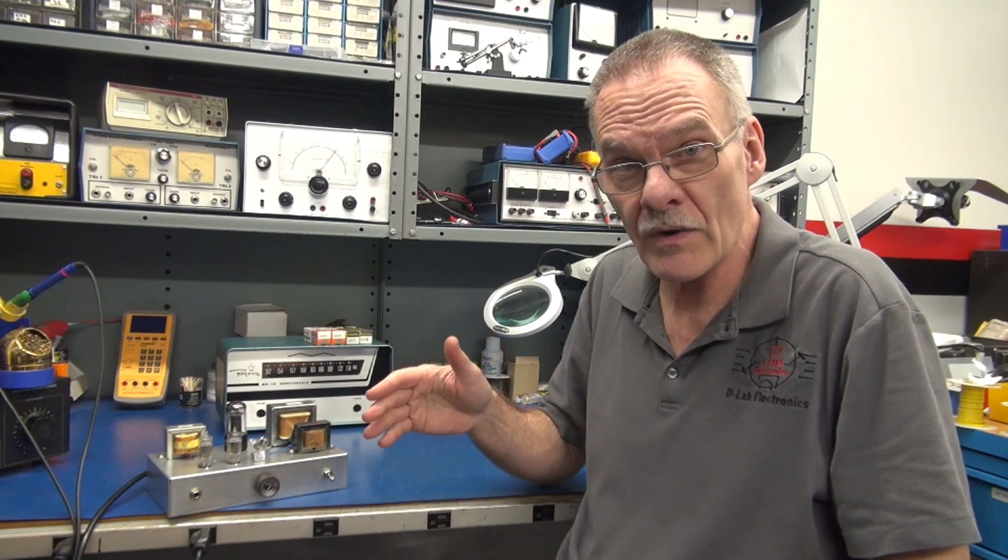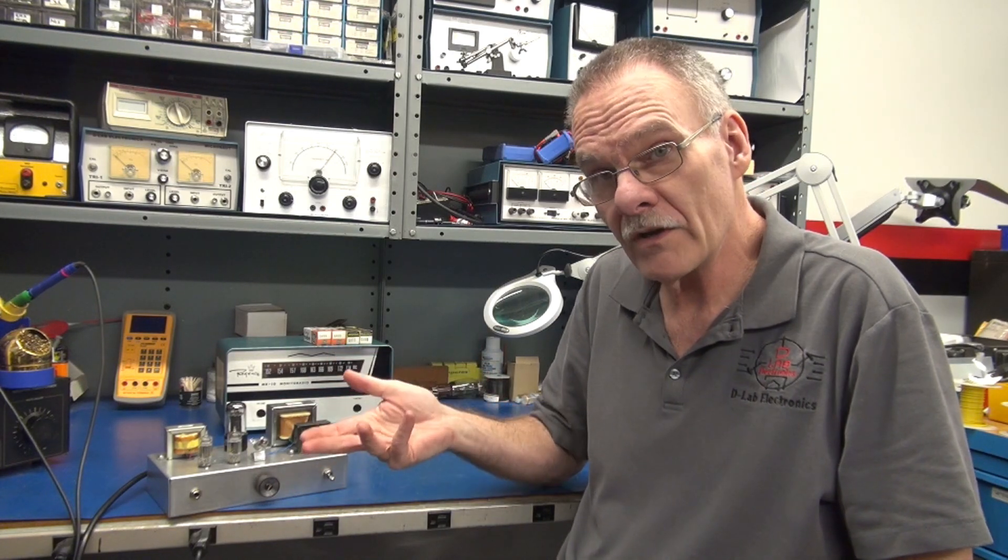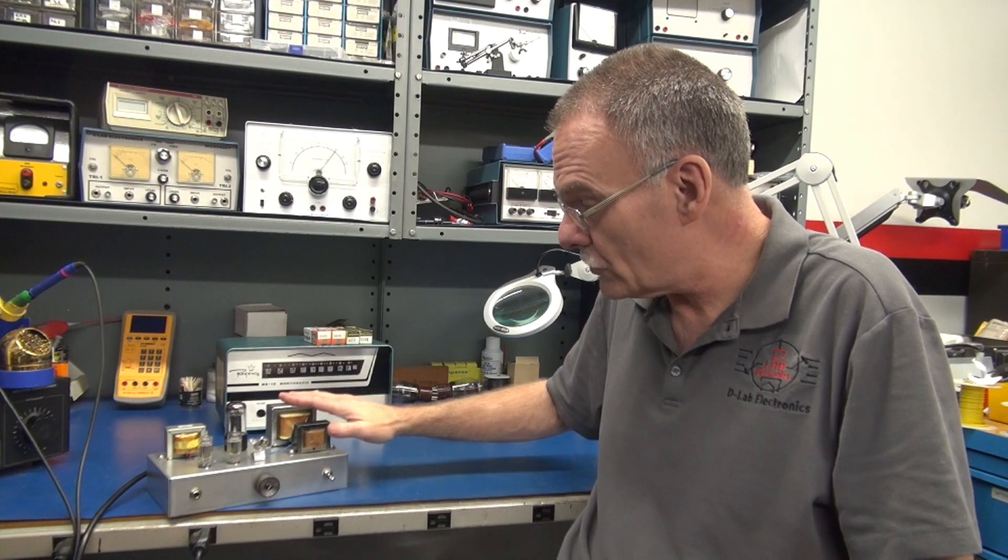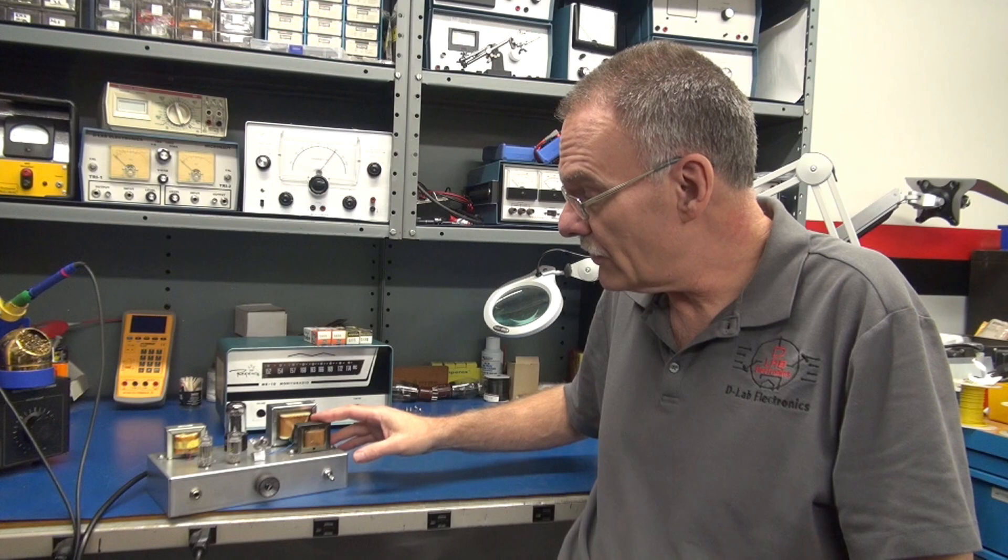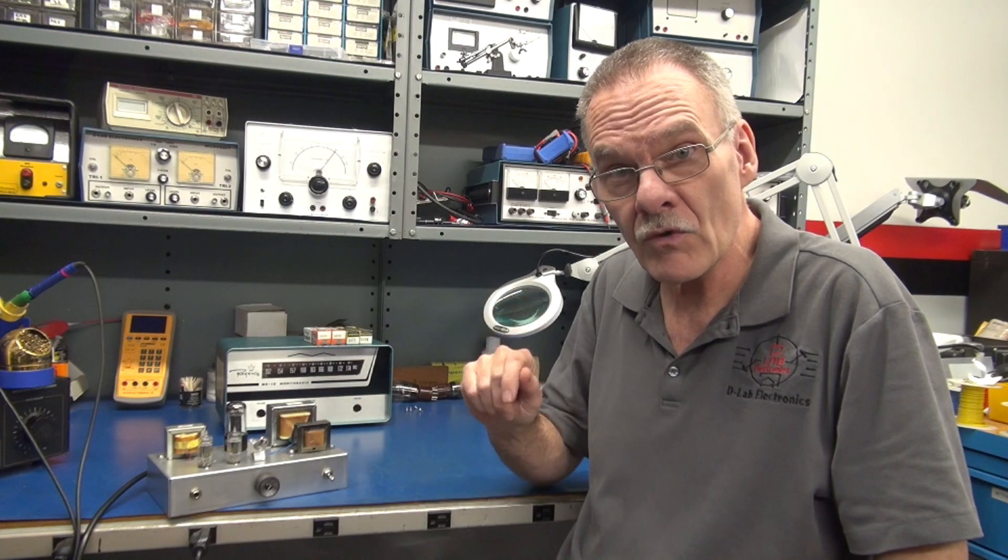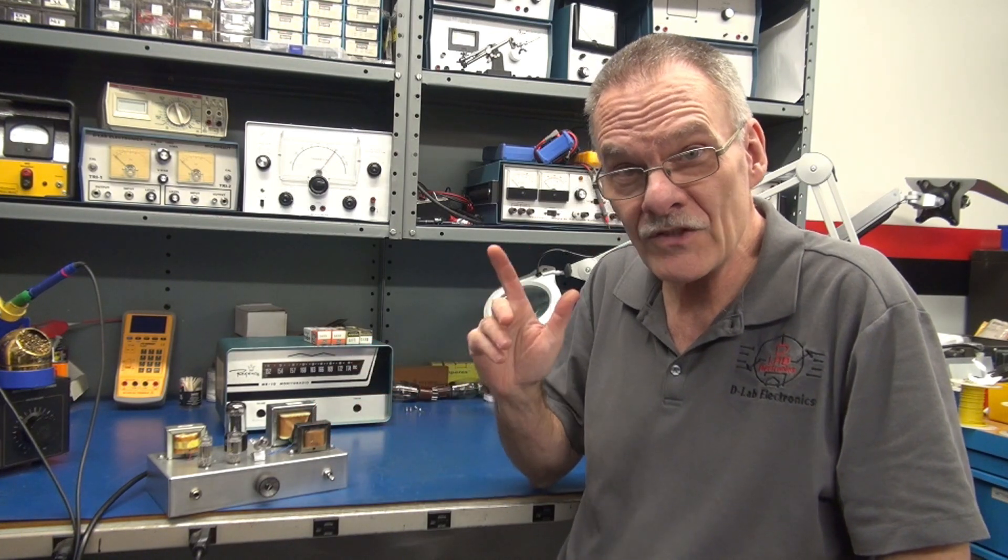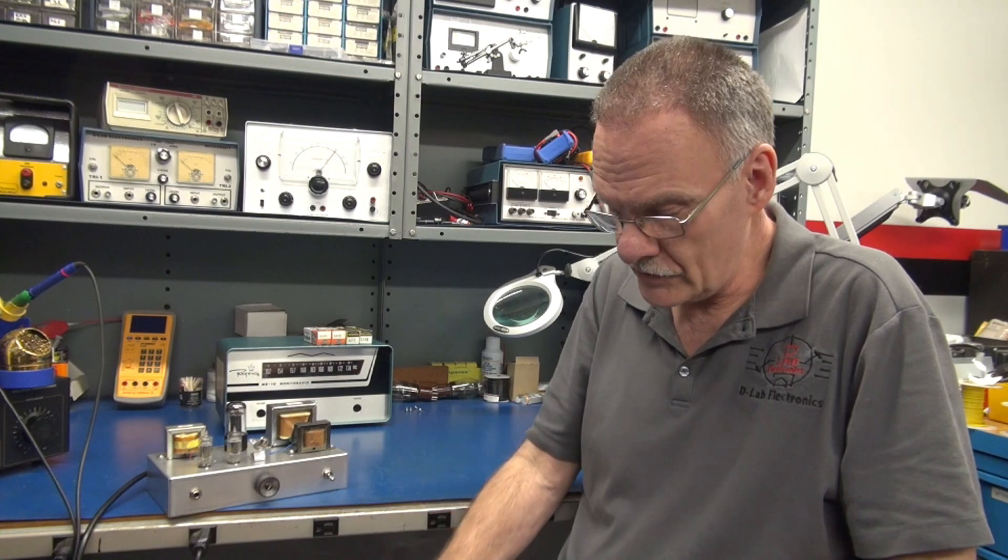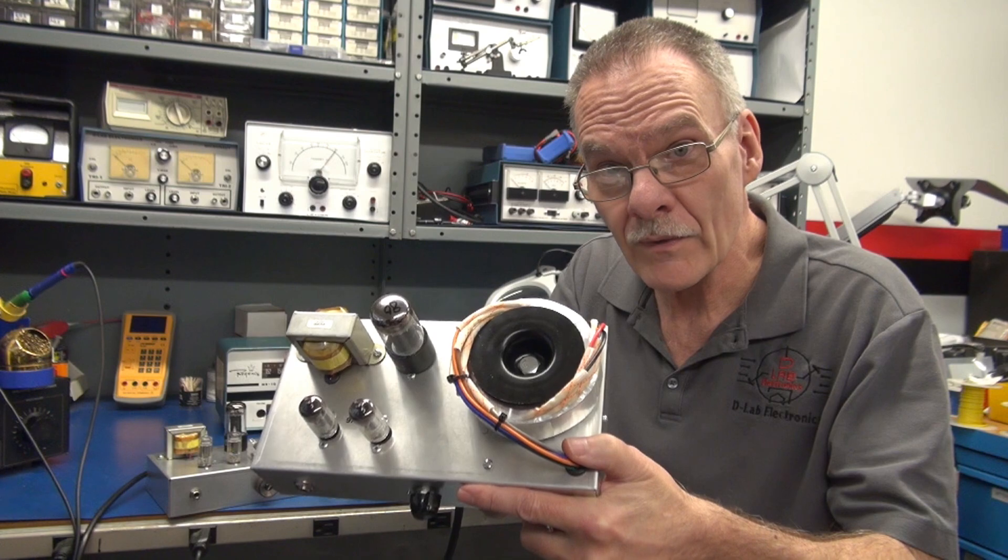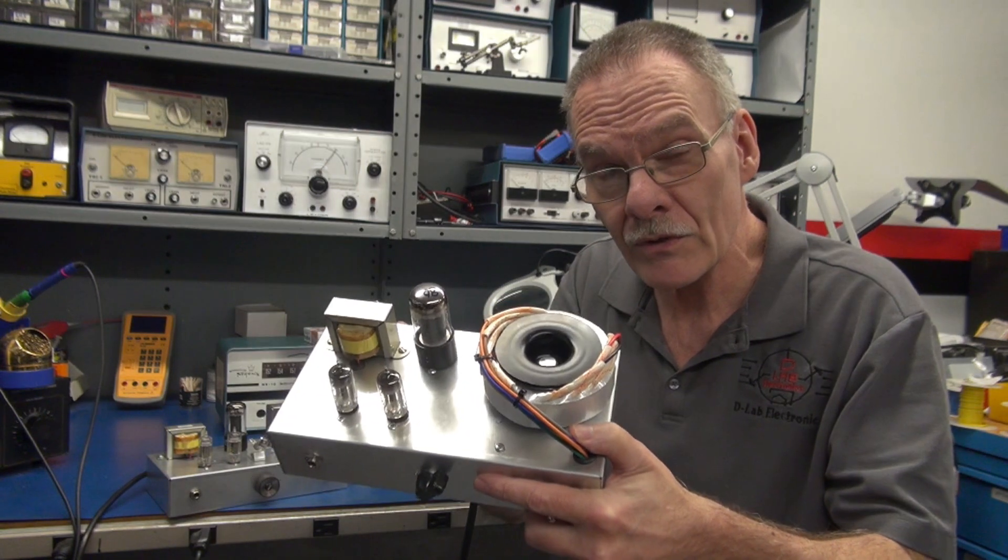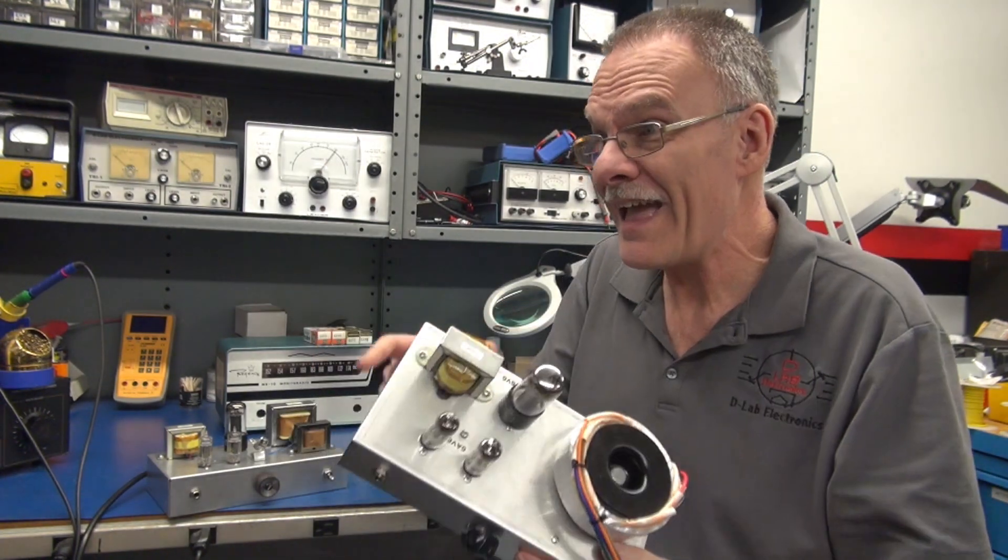And then you have to team it up with a standalone 6.3 volt transformer for the filaments. But in this video we are going to focus on the Antec toroid-type transformer that provides both high voltage and 6.3 volts at the same cost as the Triad setup.